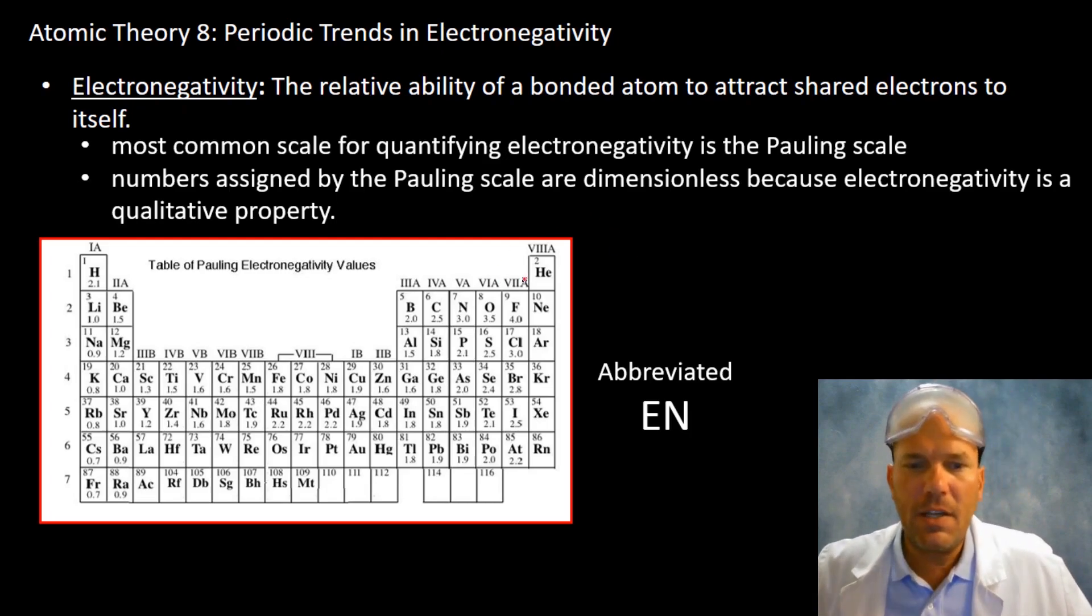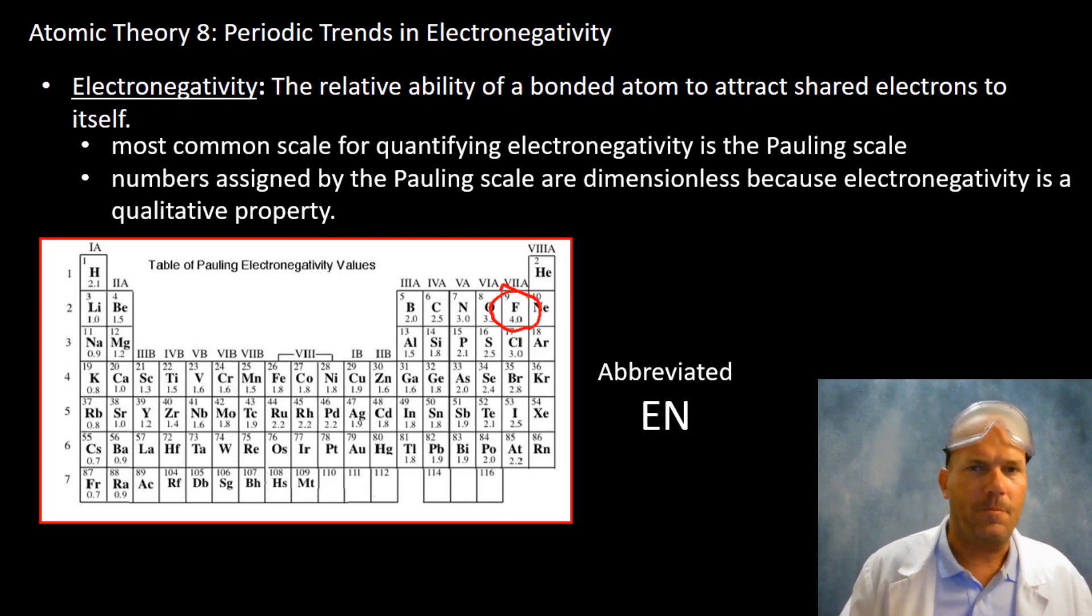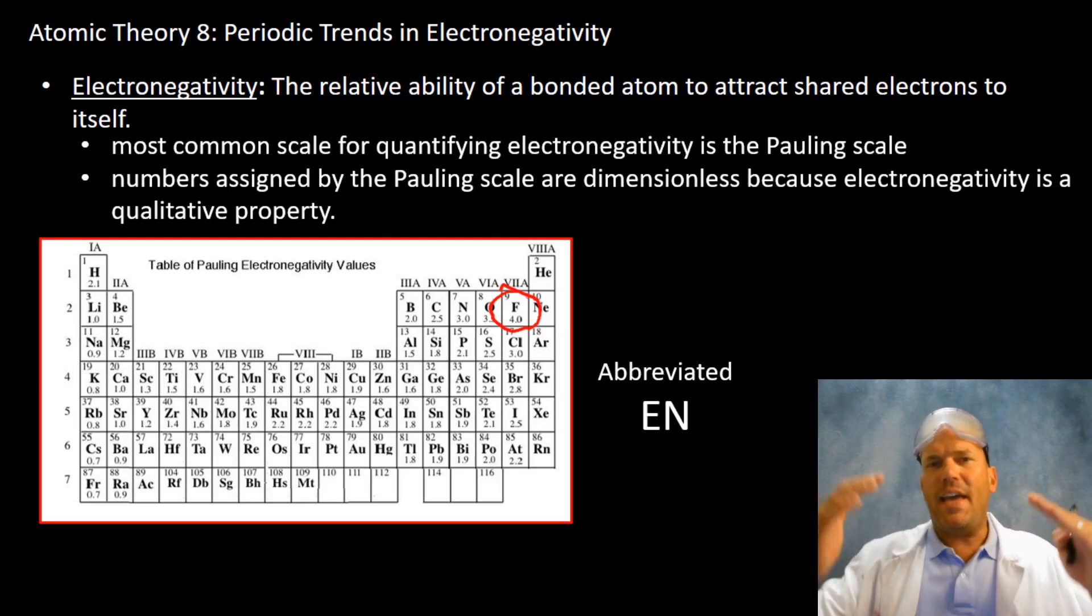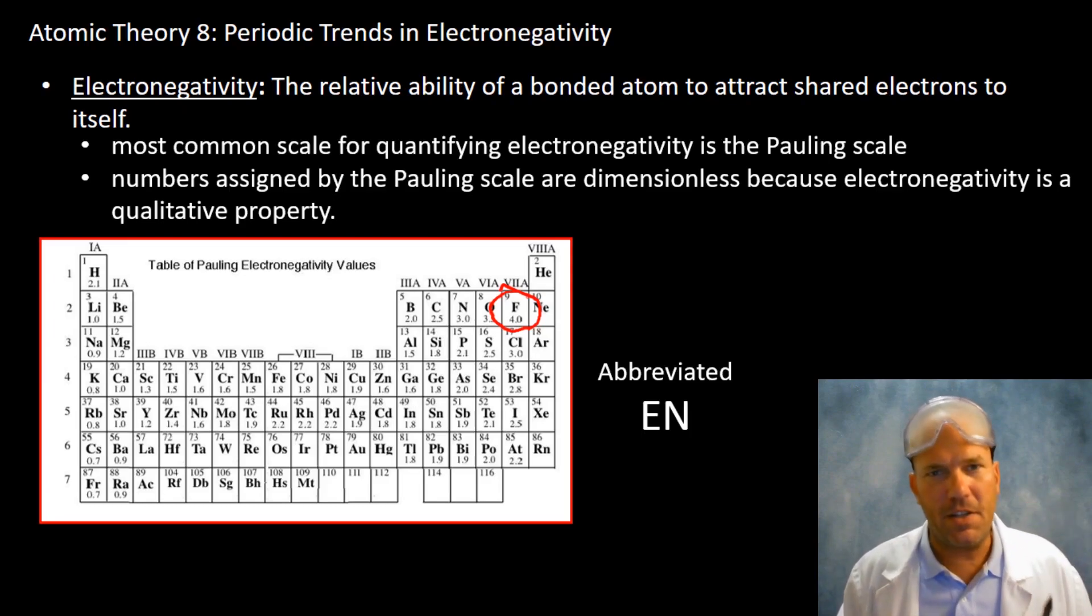It is a relative scale and it is dimensionless because it is based on qualitative properties. Direct your attention to fluorine here. Its electronegativity value is 4.0, and relative to other elements it has the highest value, which means it has the greatest ability to attract electrons to itself.